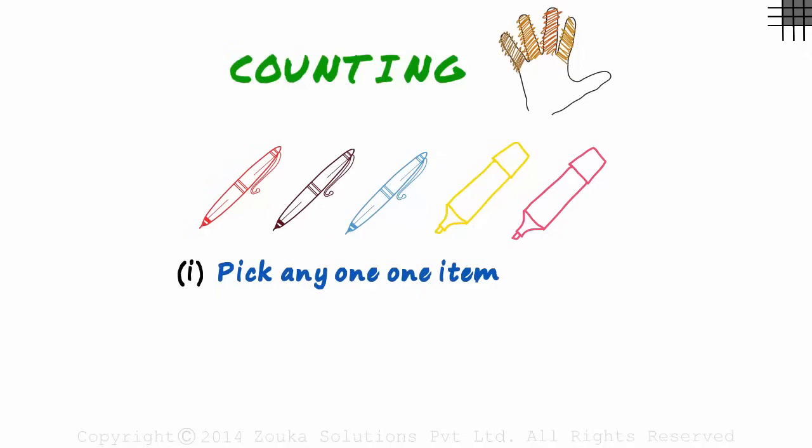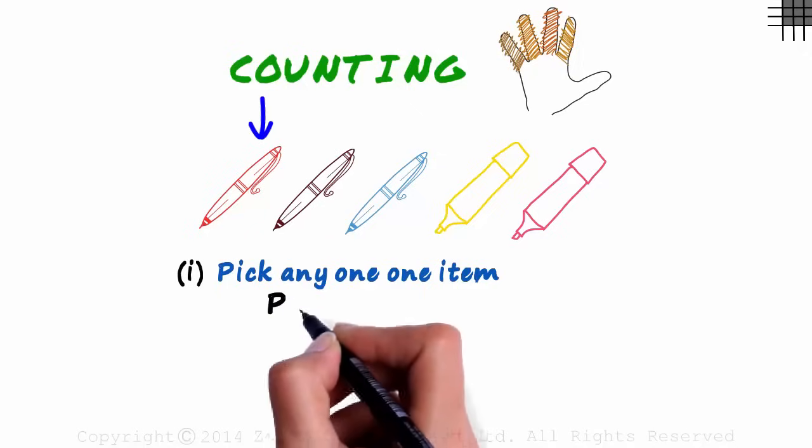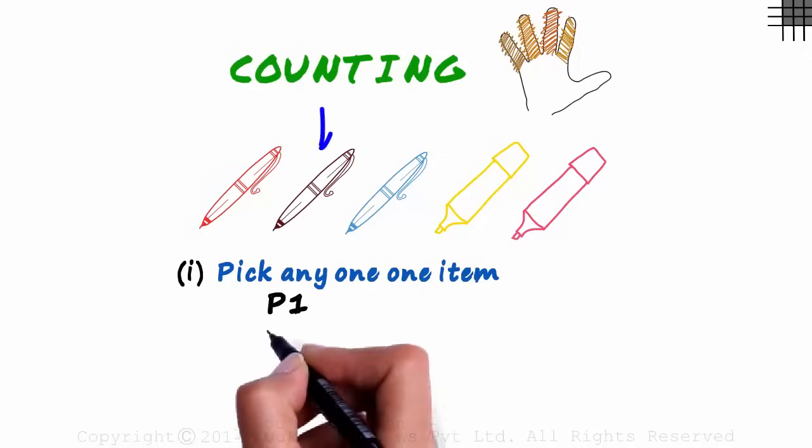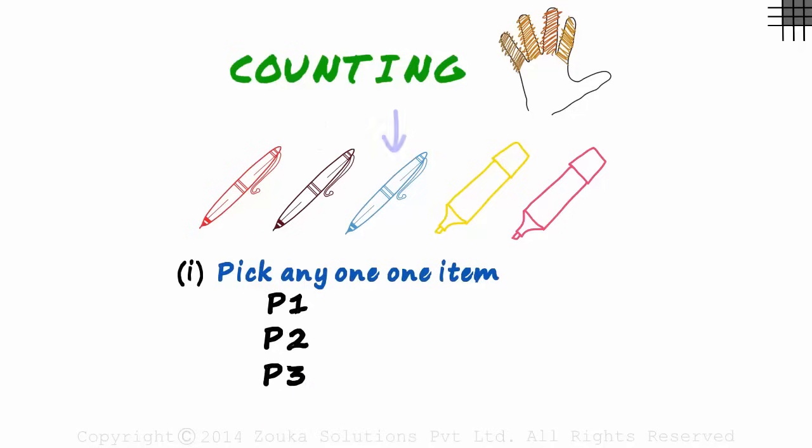Look at it logically. We can either pick the first pen, we can call it P1, or the second pen, or maybe the third pen, or maybe we pick a marker, the first one or the second one. We kept saying OR - this or this or this and so on. You can see that there are five ways in which we can pick any one item. And how do we get a five? Three ways in which a pen can be picked, plus two ways in which a marker can be picked. Five ways in all.